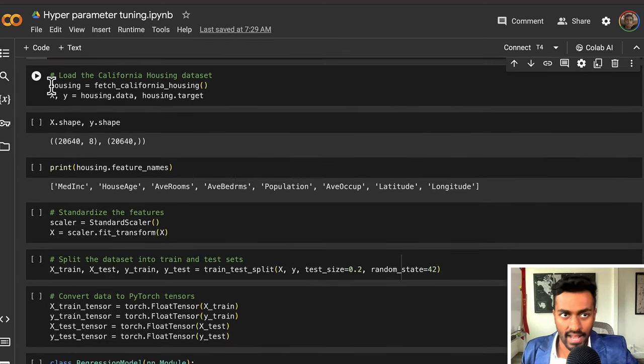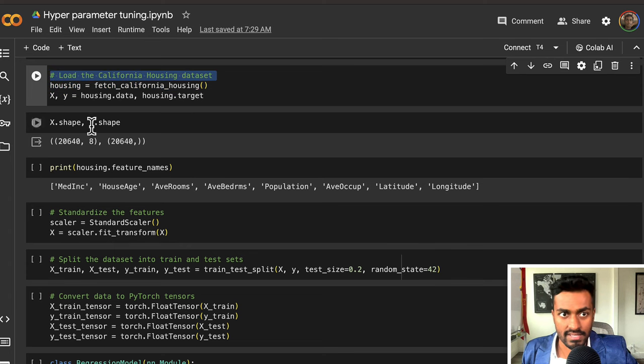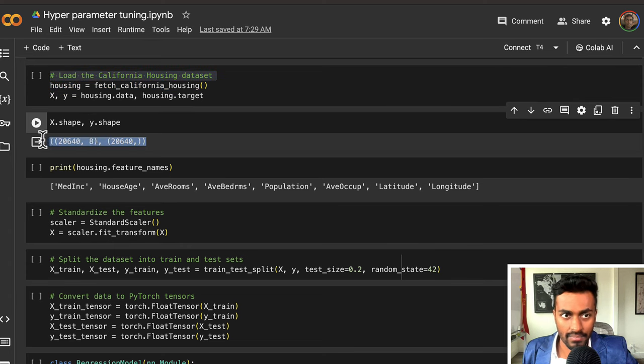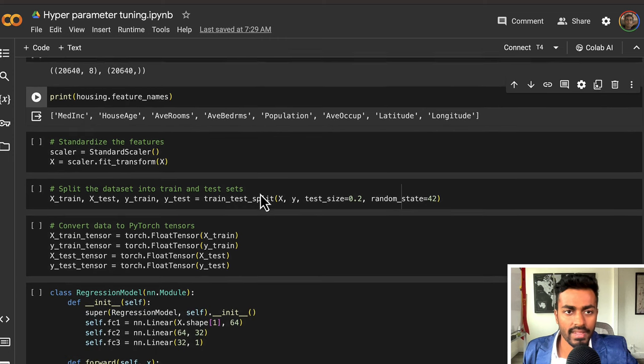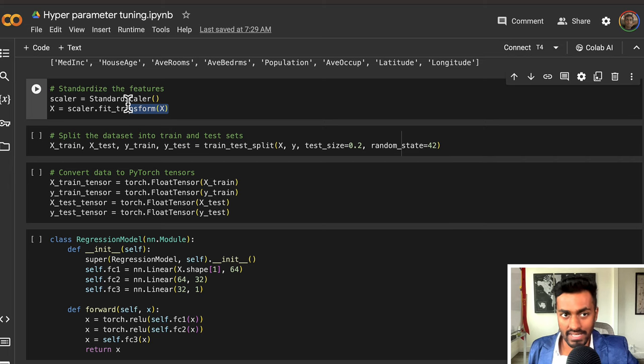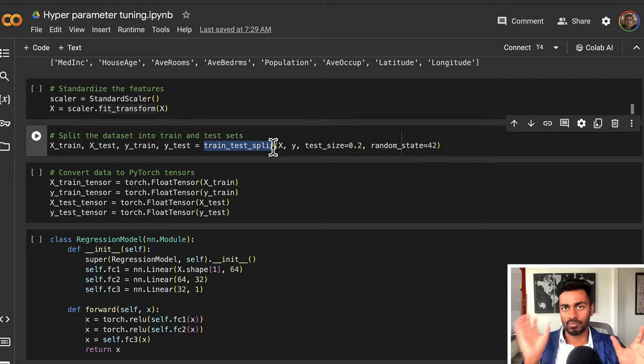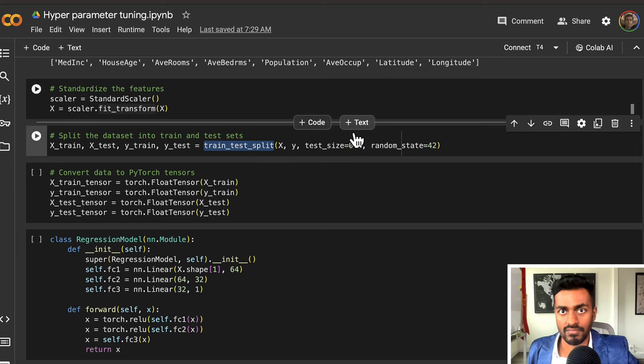We'll load the California housing dataset and we can see that we have 20,000 examples with eight features right over here. We then perform scaling and transform the input data. We can then split the train and test data into an 80-20 split where 80% is training and 20% is for test.